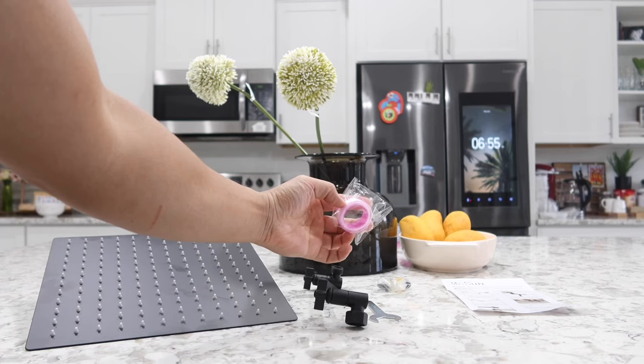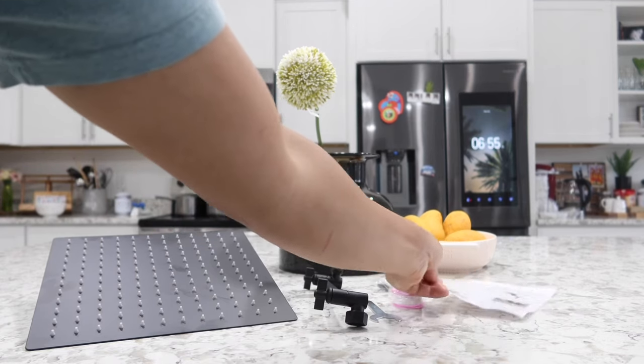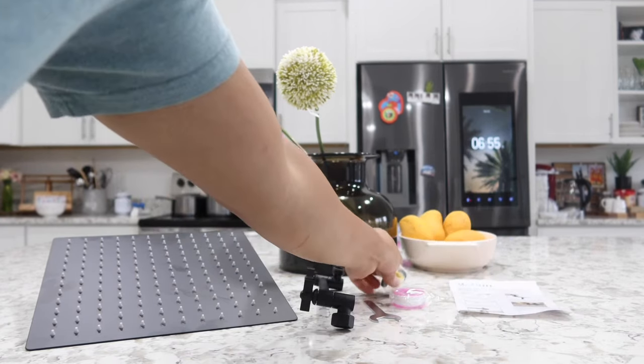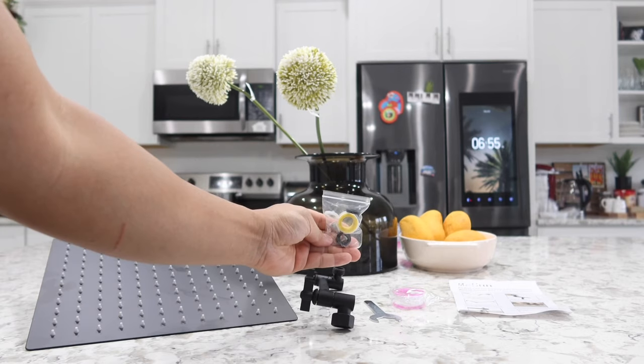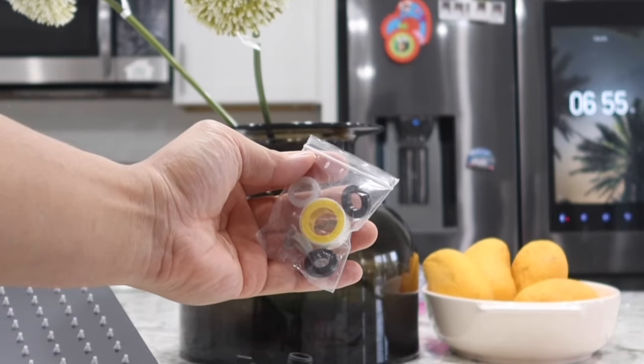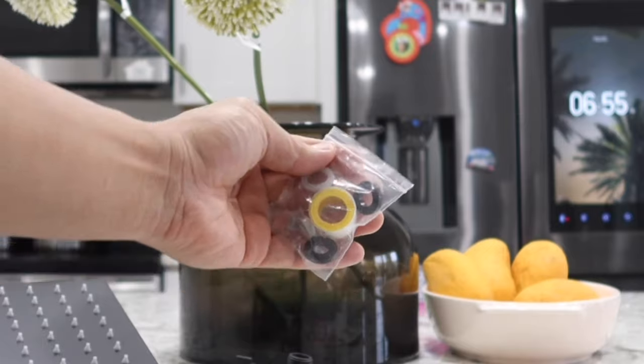Next we have some teflon tape, the instruction manual, and in this little plastic bag we have more teflon tape along with some filters and two rubber seal pieces that you will be using to insert into your arm on either end.